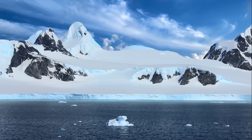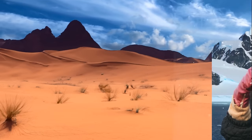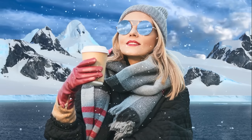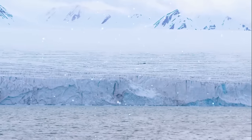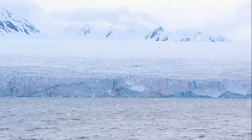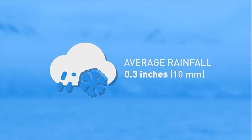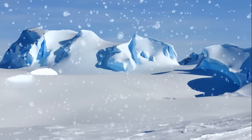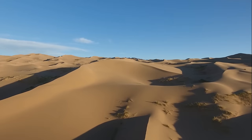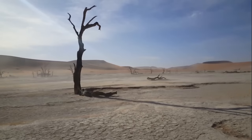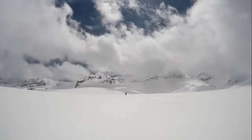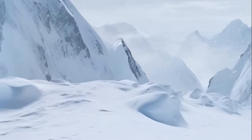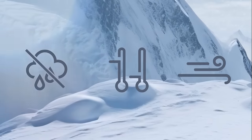You might not believe it, but Antarctica is actually a desert. With all that ice, you'd think it'd be like a winter wonderland. But the average rainfall has been just over 0.4 inches in the past 30 years. It's not the dunes or sizzling heat that makes a desert — it's the lack of precipitation. Not only is Antarctica one of the driest places on Earth, but it's also the coldest, the windiest, and the highest.